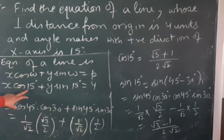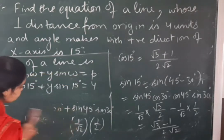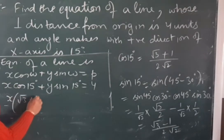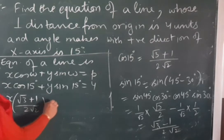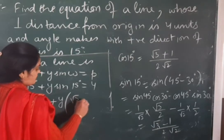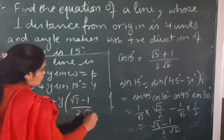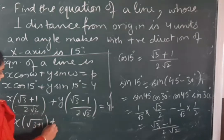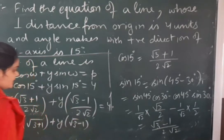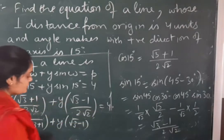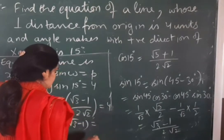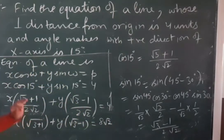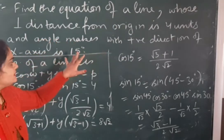Now we use these values to form the equation of the line. The equation is x cos 15 plus y sin 15 equals p. Substituting: x times (root 3 plus 1 over 2 root 2) plus y times (root 3 minus 1 over 2 root 2) equals 4. Multiplying both sides by 2 root 2: x(root 3 plus 1) plus y(root 3 minus 1) equals 8 root 2. This is the equation of the straight line when perpendicular distance is 4 units and angle is 15 degrees.